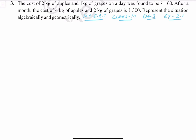Hello everybody, today we are going to do NCERT class 10 chapter 3 exercise 3.1 question number 3. Let's read the question. The cost of 2 kg of apples and 1 kg of grapes on a day was found to be Rs. 160. After a month, the cost of 4 kg of apples and 2 kg of grapes is 300. Represent this situation algebraically and geometrically.